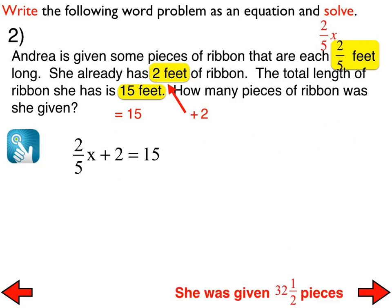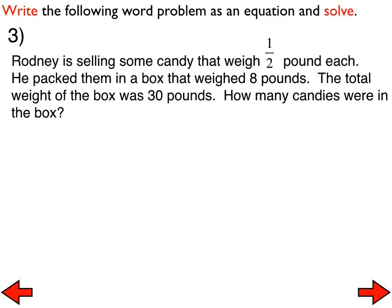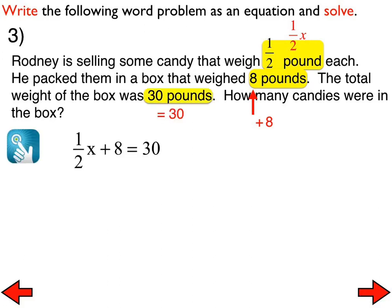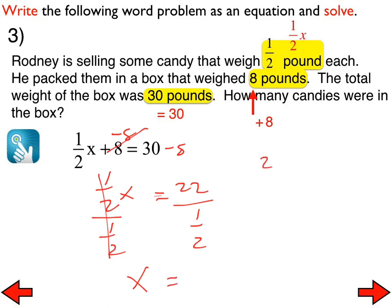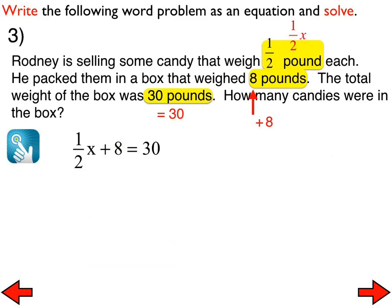Let's turn our notes over to the back side. Finish off numbers 3, 4, and 5, then we'll compare with our shoulder partner — the equations we came up with and our solutions in words. For number 3, a person is selling candy that weighs a half pound each in a box that weighs 8 pounds, with a total weight of 30 pounds. We subtract 8 from both sides, getting 1 half x equals 22. We divide both sides by 1 half, and 22 divided by 1 half turns into a multiplication problem giving us 44 candies altogether.